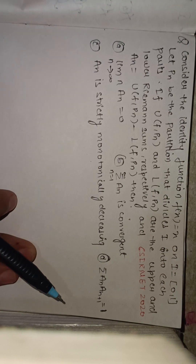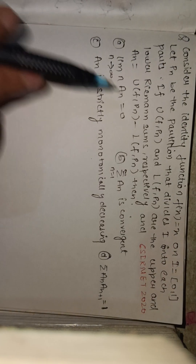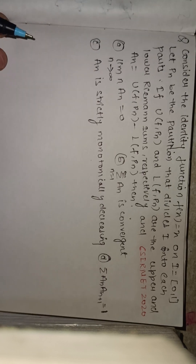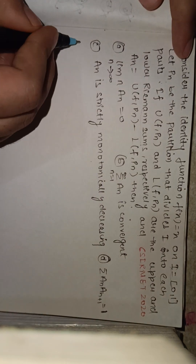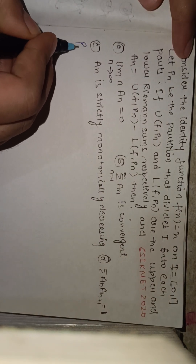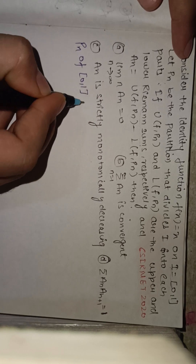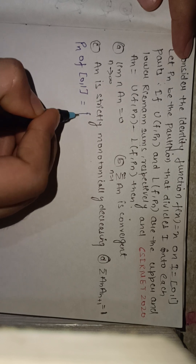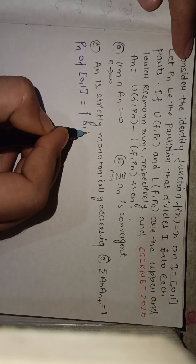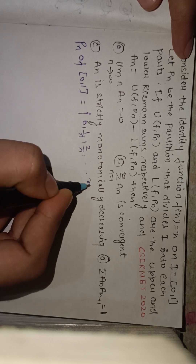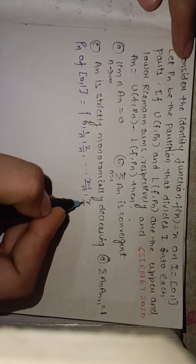This question is based on the concept of Riemann integrals. For finding the upper and lower Riemann sums, we need to find the partition of this interval. The partition Pn of the interval [0, 1] is: 0, 1/n, 2/n, ..., (r-1)/n, r/n, ..., n/n.